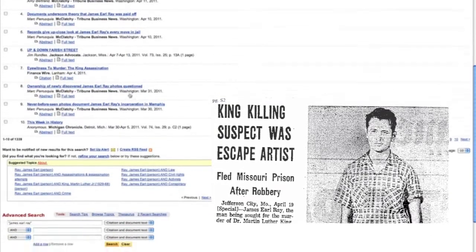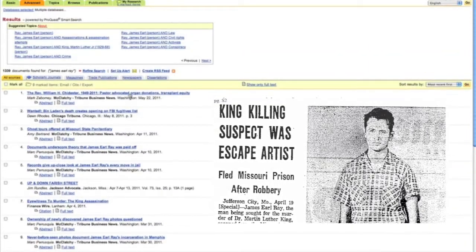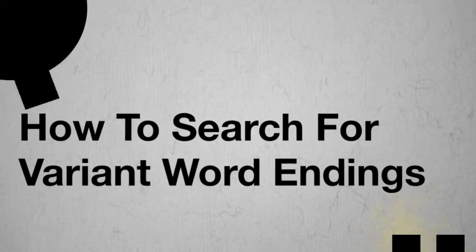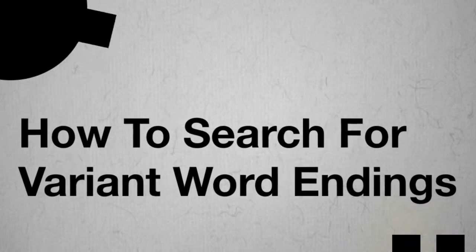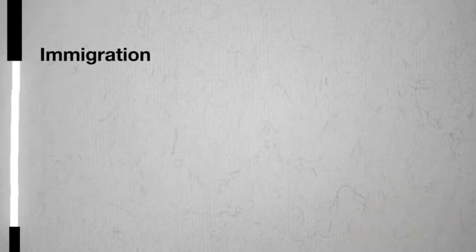Searching for a phrase is the first of the three basic search techniques you will need to search library databases. The second important technique enables you to search for variant forms of a word with a single query. Because databases are completely literal, I have to search for every form of my search term that could retrieve relevant articles. For example, if the word 'immigration' is likely to appear in articles on my topic, then it's likely that the words immigrant, immigrants, immigrate, immigrates, immigrating, or immigrated might also appear. If I want to retrieve all relevant documents, then I need to search for all forms of the word.